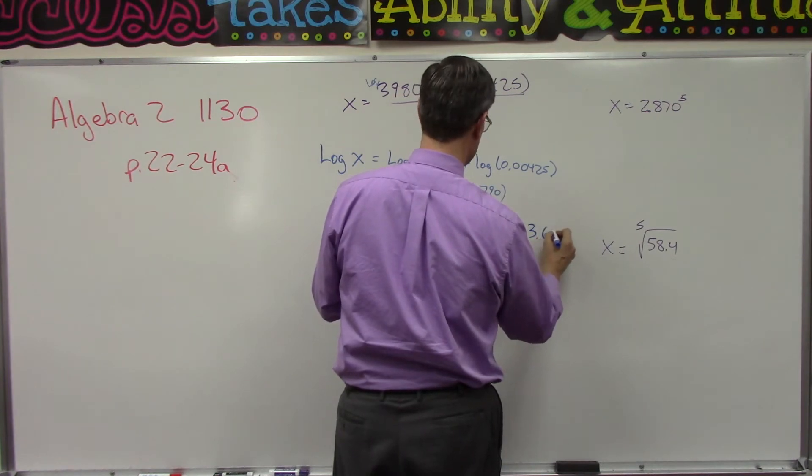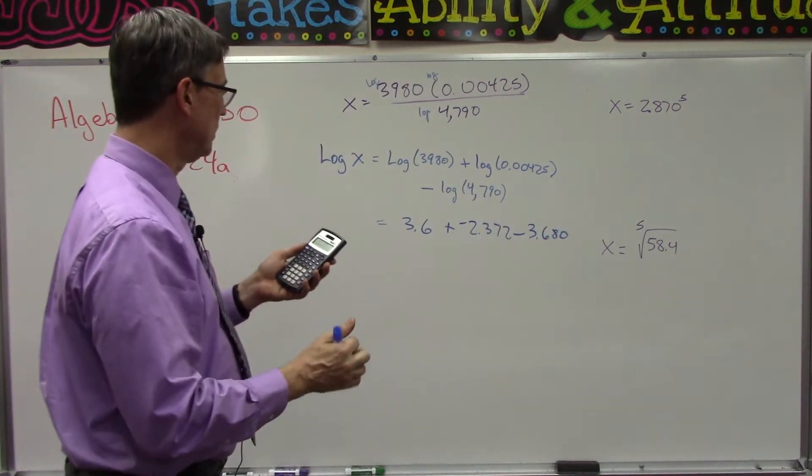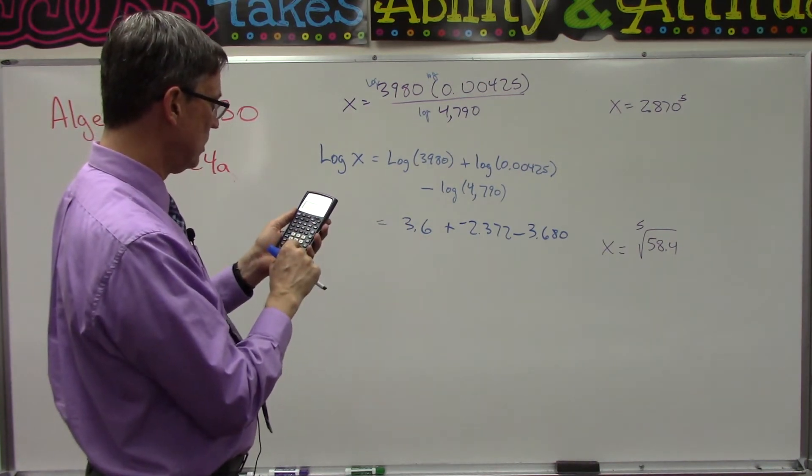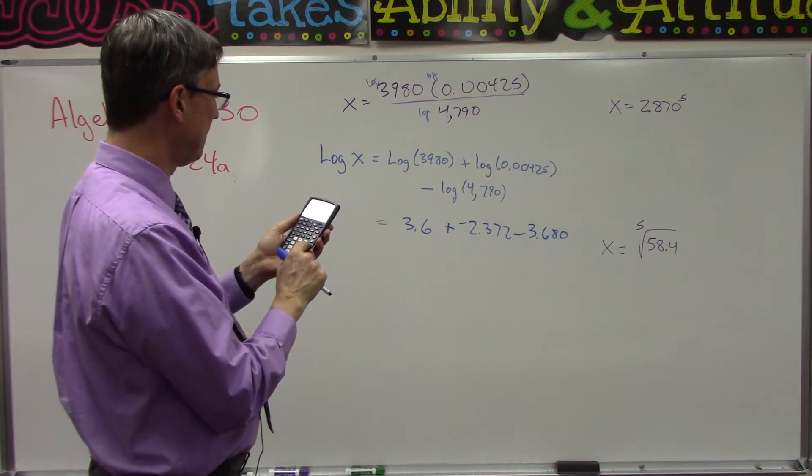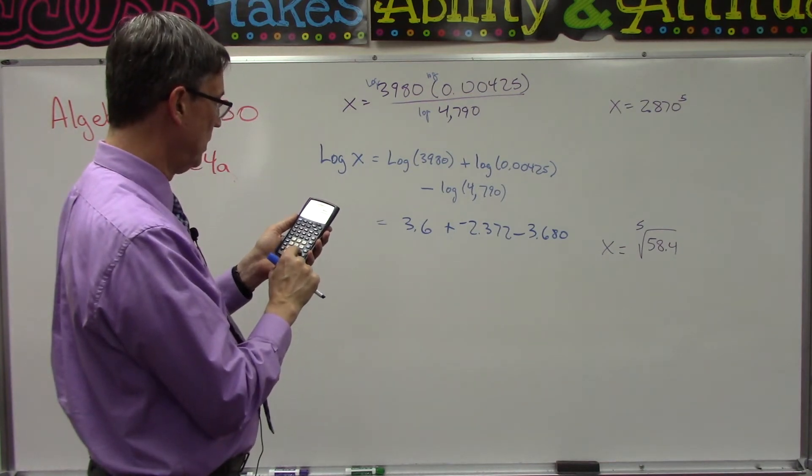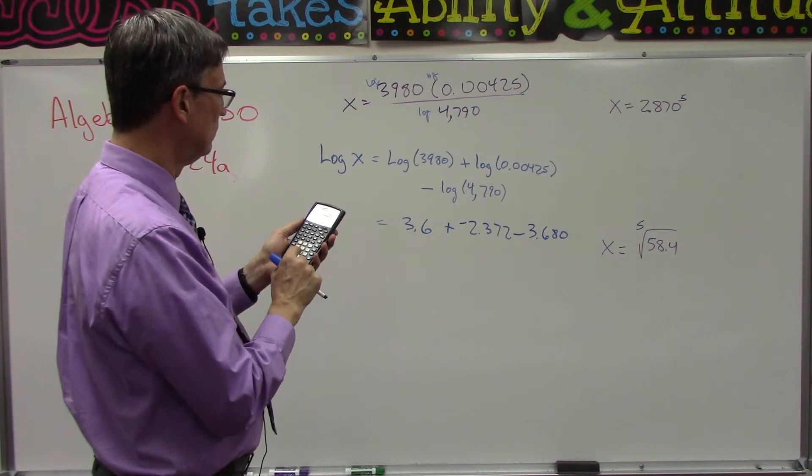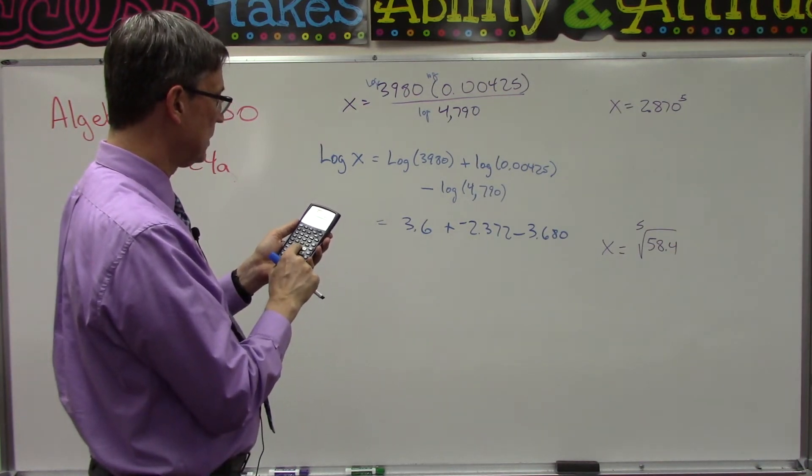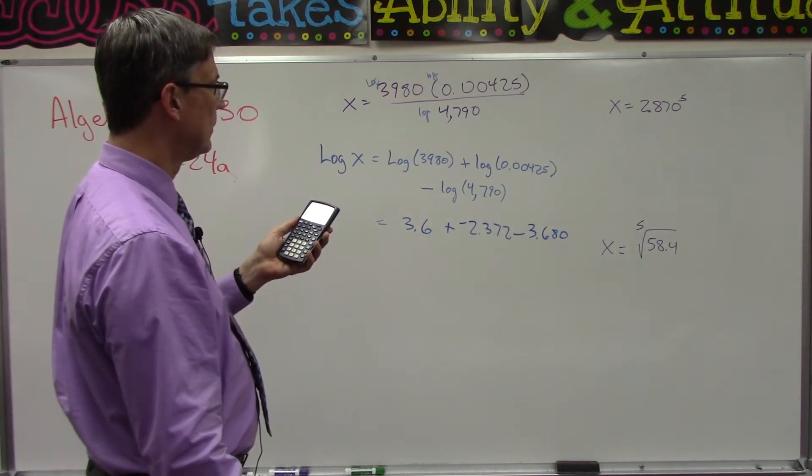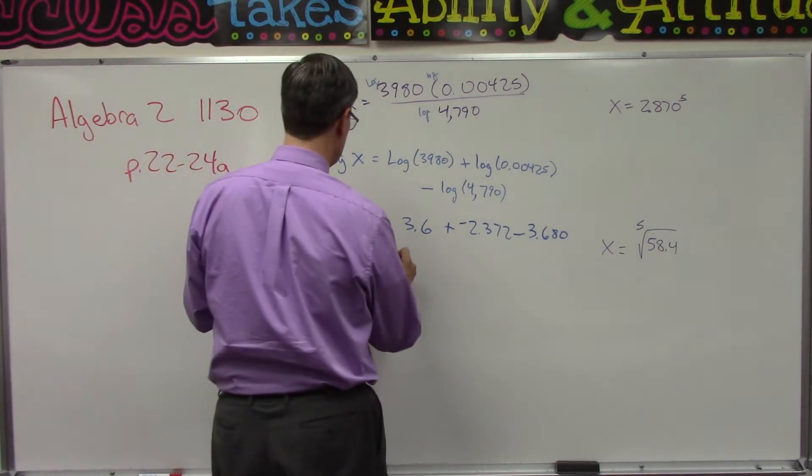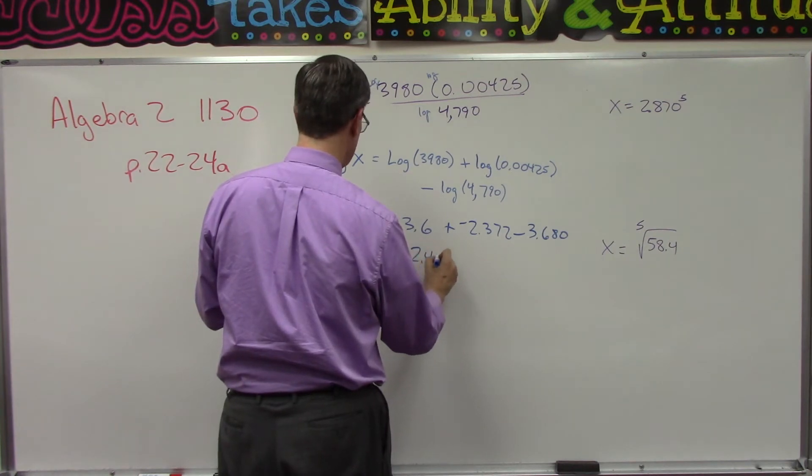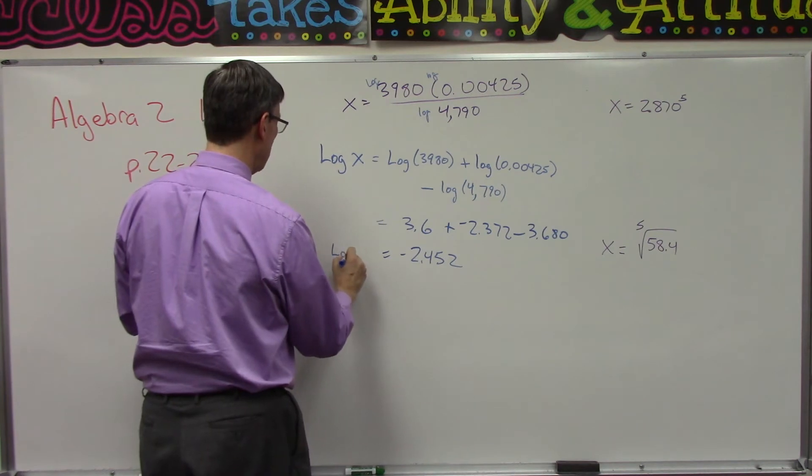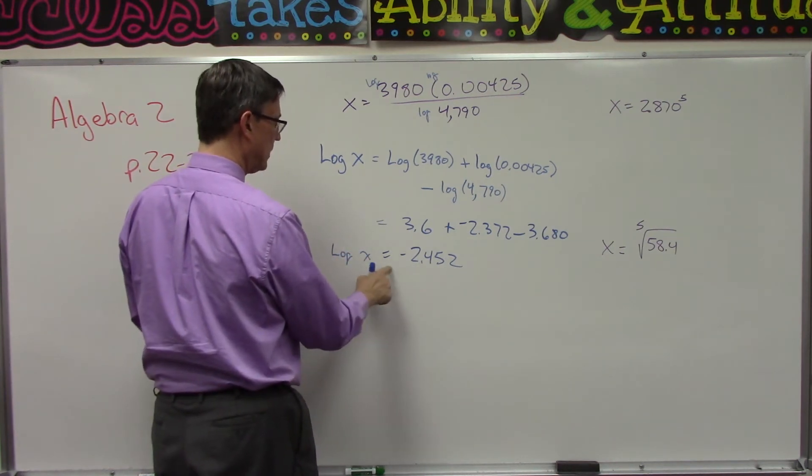So let's go back to the beginning and just do the real simple addition and subtraction: 3.6 minus 2.372 minus 3.68 equals negative 2.452.